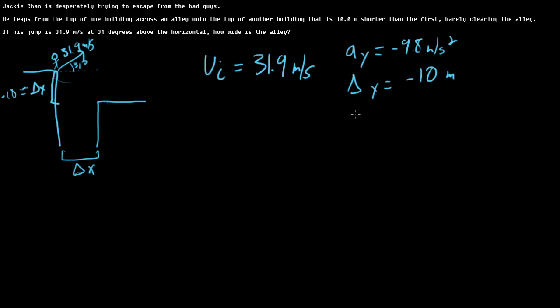We don't know vf. We can figure out vi y and vi x, right? Because we know how to do trig, so we can just do 31.9 sine of 31 to get that, and 31.9 cosine of 31 to get that. So let me go ahead and do that. So we have those.